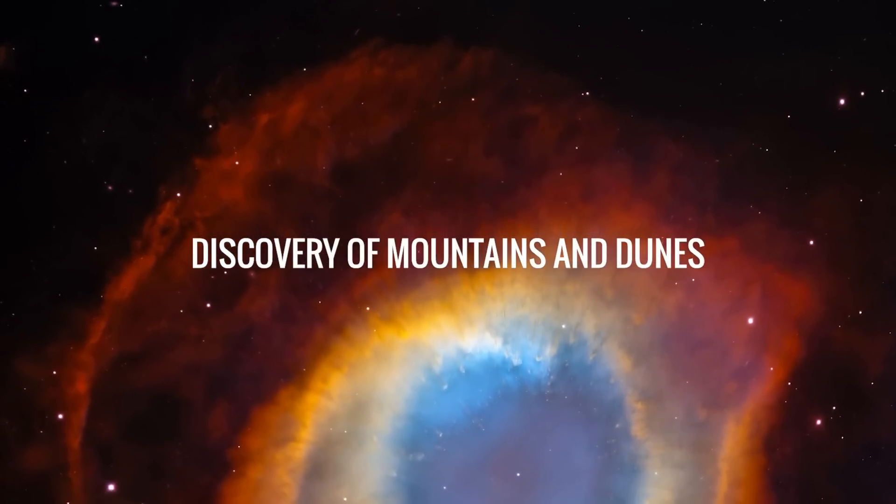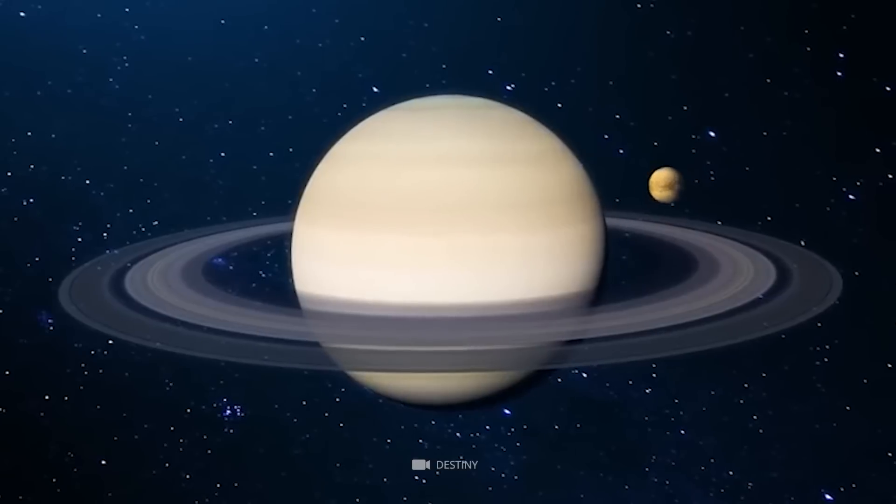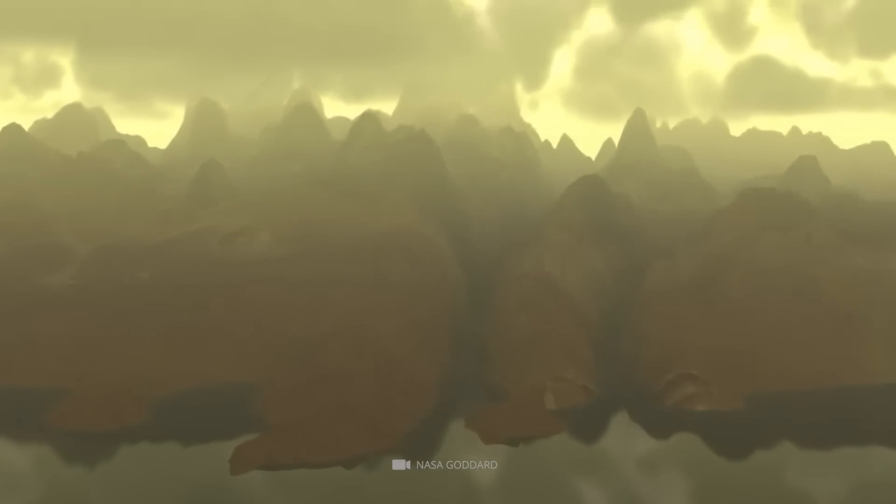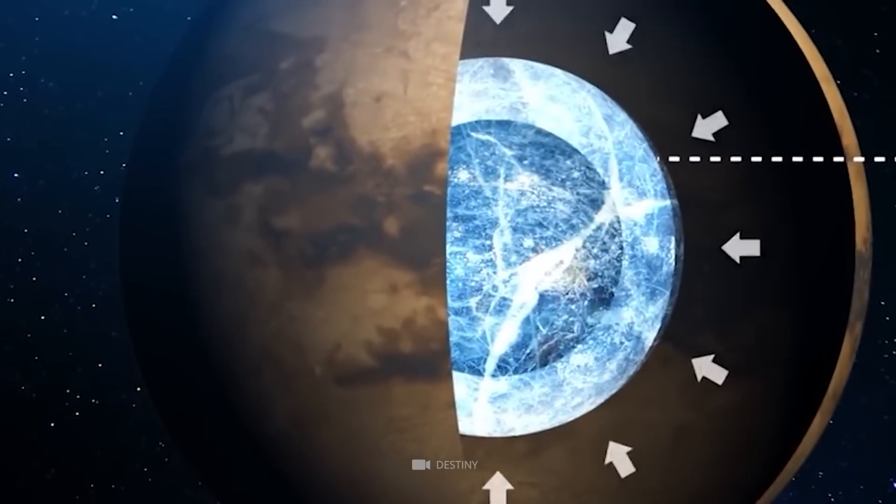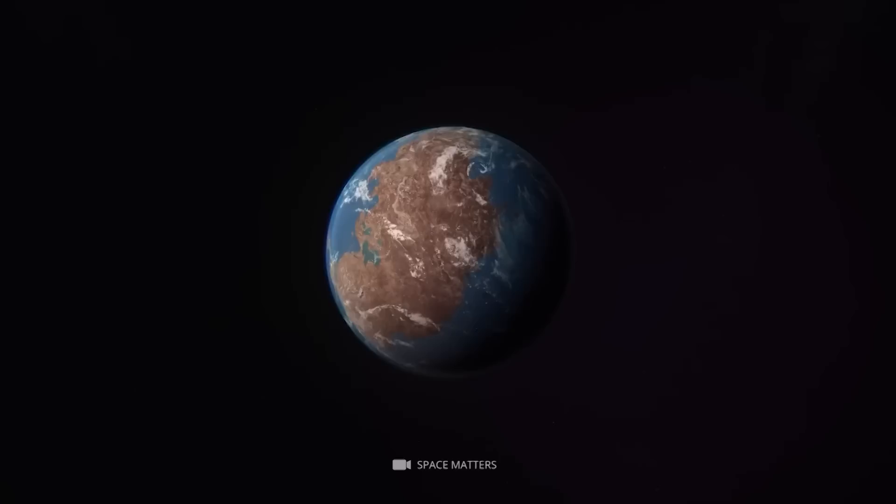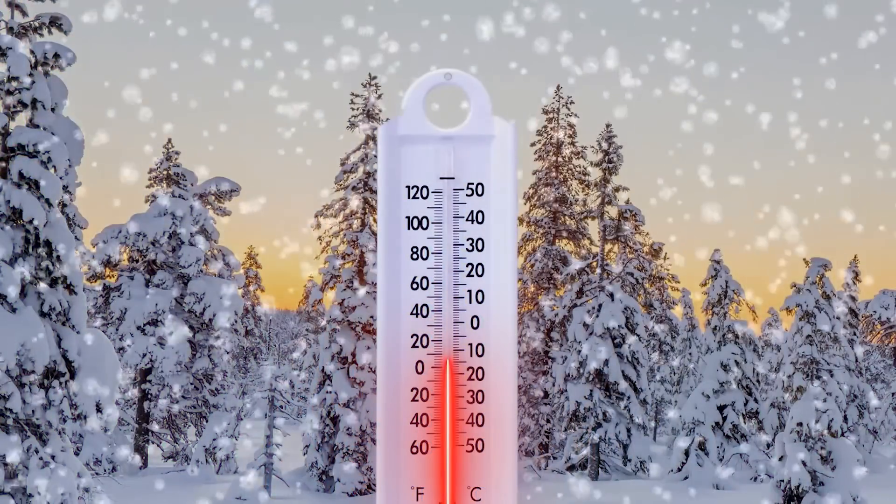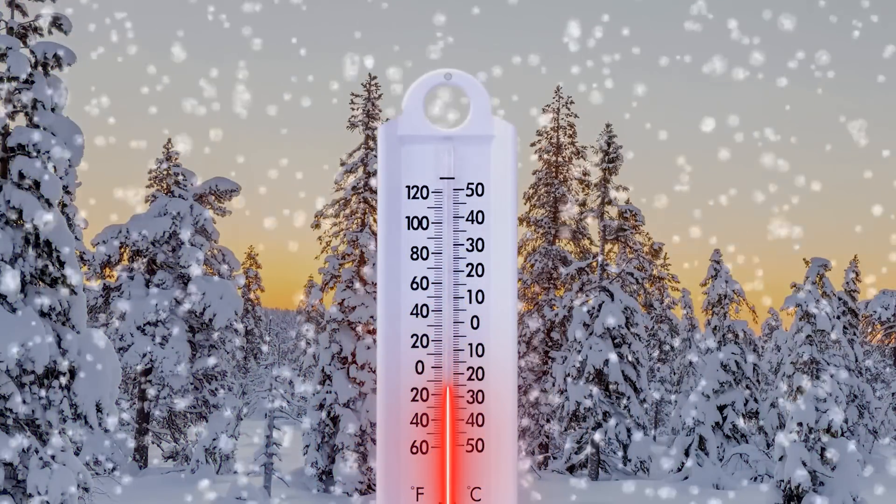Discovery of mountains and dunes. One of the most fascinating discoveries on Titan, one of Saturn's moons, is the presence of mountains and dunes made of icy materials instead of rock and sand, which are common on Earth. This is due to the extremely cold temperatures on Titan, which average around minus 290 degrees Fahrenheit.